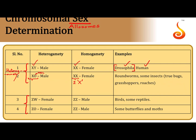In the last two cases — ZW/ZZ and Z0/ZZ — the females have unlike sex chromosomes, so the females become heterogametic. As you can see, the female with ZW will produce two different types of eggs: 50% with Z and 50% with W. The male has two like paired Z chromosomes, so all the sperm produced by the male will have only the Z chromosome.